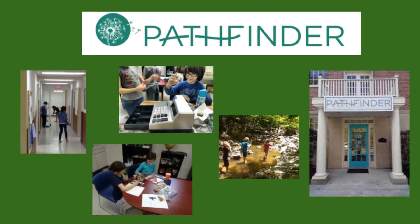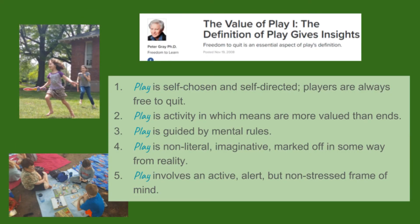The third characteristic of play is that it is guided by mental rules. This is not intuitively obvious — it seems counterintuitive to some people. Play is freely chosen, but it is not free-form. That's an interesting paradox: children freely choose, when they choose to play, to put themselves into a situation where they're no longer fully free. Except they are free to quit. But as long as they are in the play, they are limiting their own freedom — there are only certain things you can do.